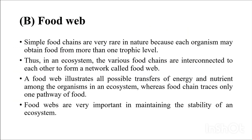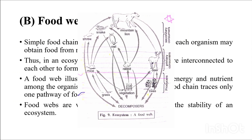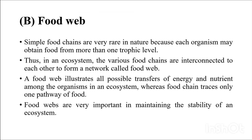Simple food chains are very rare in nature because each organism may obtain food from more than one trophic level. In an ecosystem, various food chains are interconnected with each other. A food web illustrates all possible transfers of energy and nutrients among organisms in an ecosystem, whereas a food chain traces only one pathway. Food webs are very important in maintaining the stability of an ecosystem.